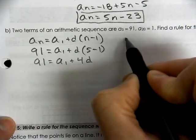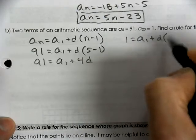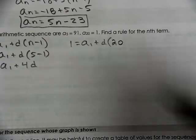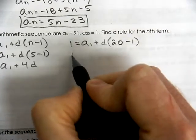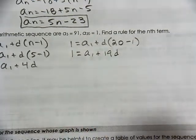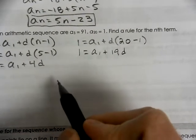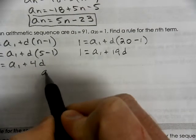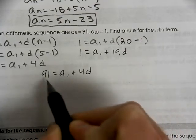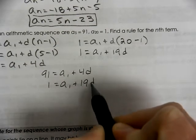5 minus 1 is 4. So I'm going to call that 4d. Then I'm going to come to this side and say that I get a value of 1 when I'm working with the number 20. That becomes 19d. Now I have our two terms. So I'm going to set them up. I'll put the larger number on top. I'll put 91 equals a of 1 plus 4d. Then 1 equals a of 1 plus 19d.